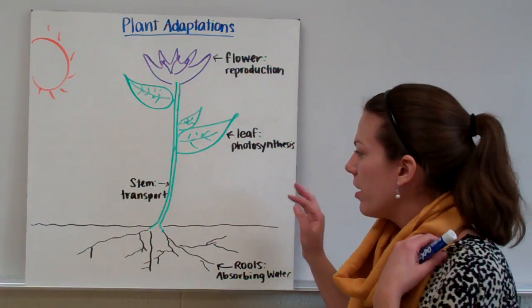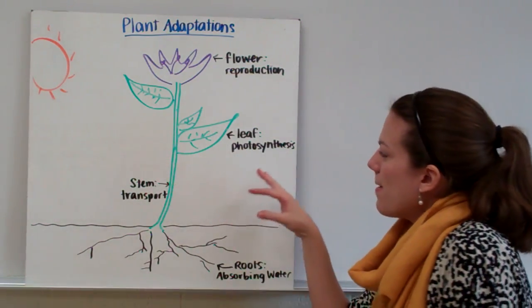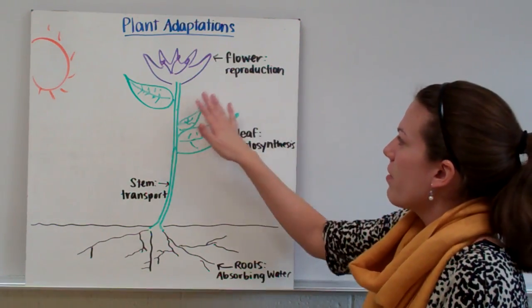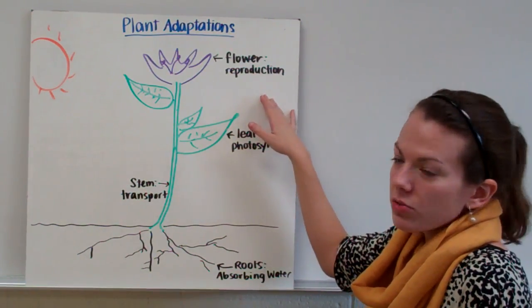This is a rough sketch of a plant here. You can see my little sun. You probably know about a lot of parts of plants already. Plants have flowers. Flowers help some plants reproduce.